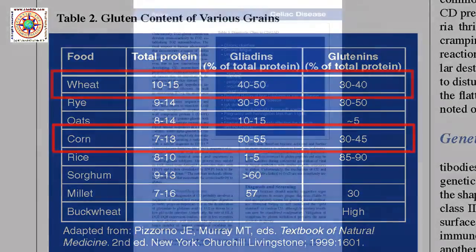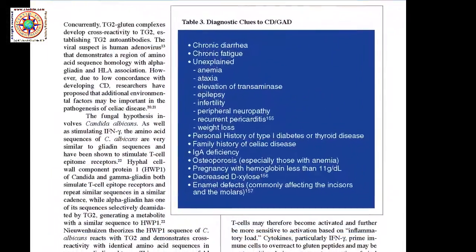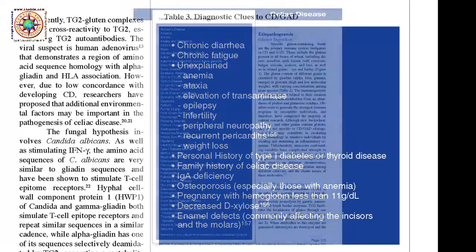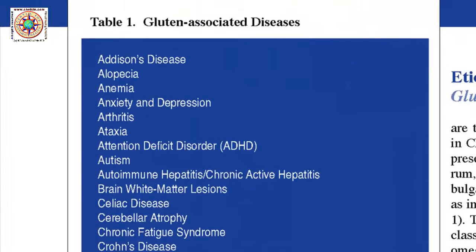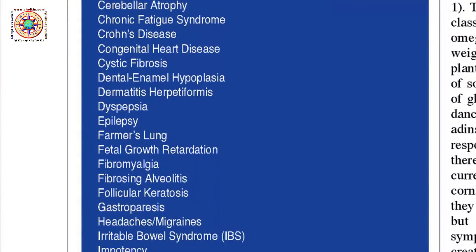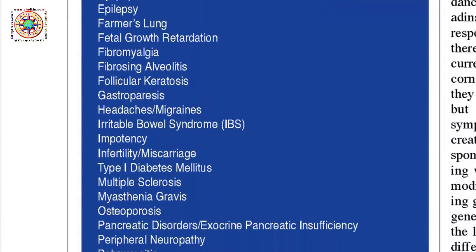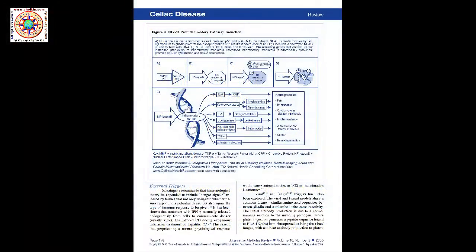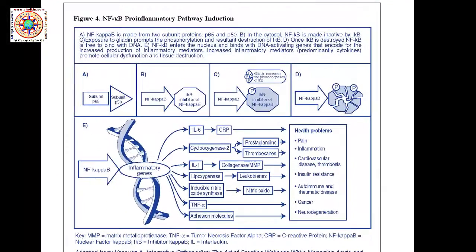Page 179 has a table of symptoms and conditions that can be a clue about gluten intolerance, while page 173 has a table of all the gluten-associated diseases, which is huge. On page 178, there's a diagram of how the inflammatory process is triggered by these proteins and all the complexity involved once these genes have been turned on.